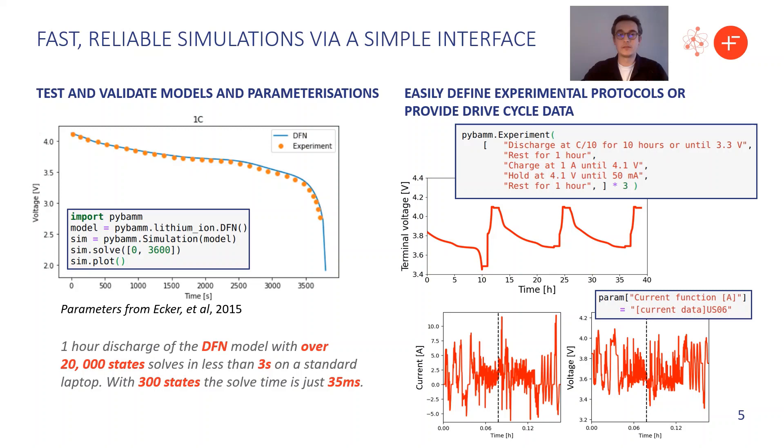PyBaMM has a simple interface for running simulations. This means people with little to no coding experience can get up and running very easily. If you just want to run a standard 1C constant current discharge, then you can do this in just five lines of code. All you need to do is pick your model, load up the simulation, and tell it how long you want to solve for. You can then plot the results with a simple inbuilt plotting functionality.